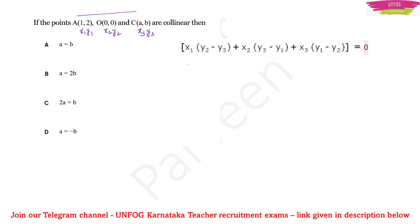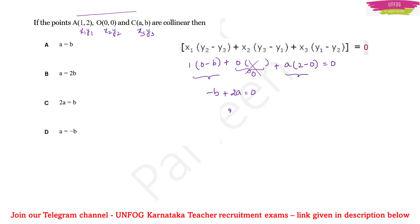Substitute: x1 = 1, y2 = 0, y3 = b; x2 = 0 so that entire term vanishes; x3 = a, y1 = 2, y2 = 0. After simplification you get −b + 2a = 0, so 2a = b. Therefore option C is the correct answer. The key is remembering the condition x1(y2 − y3) + x2(y3 − y1) + x3(y1 − y2) = 0.